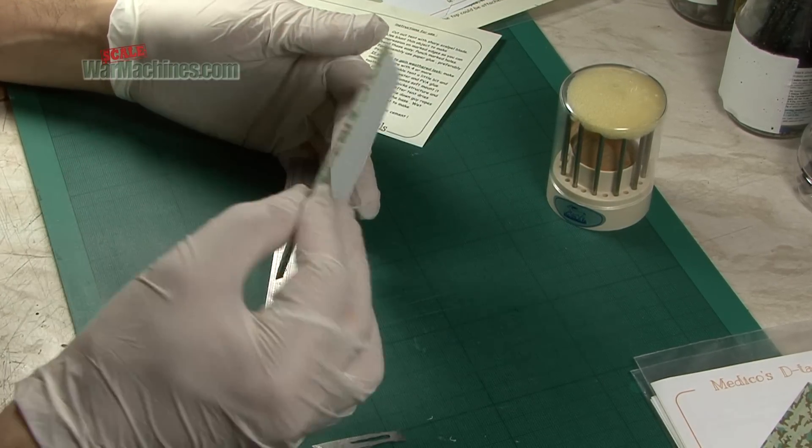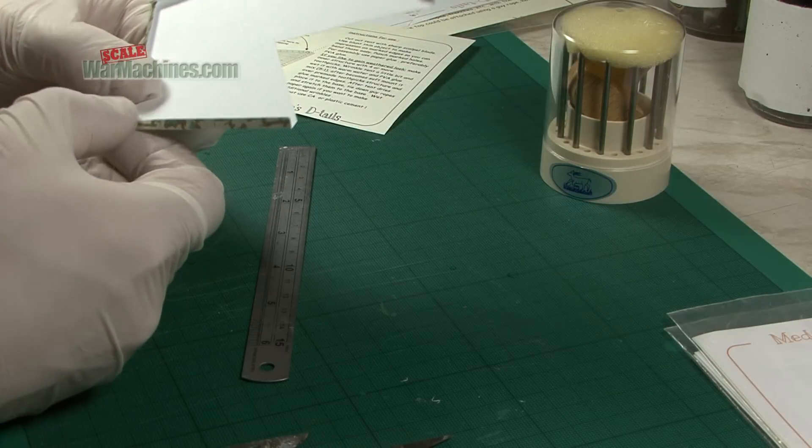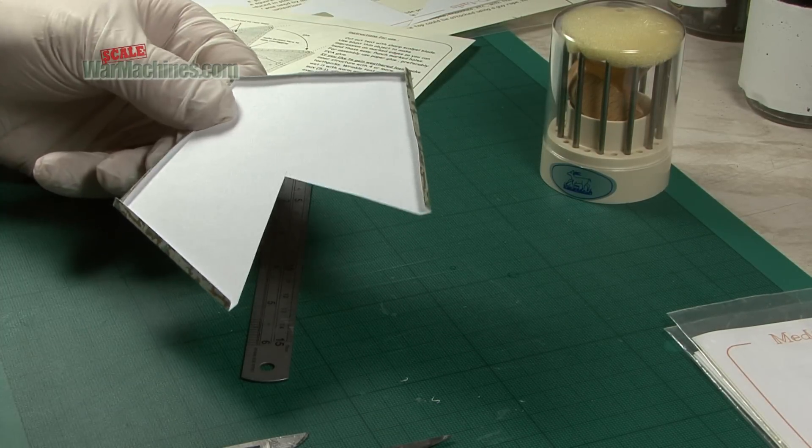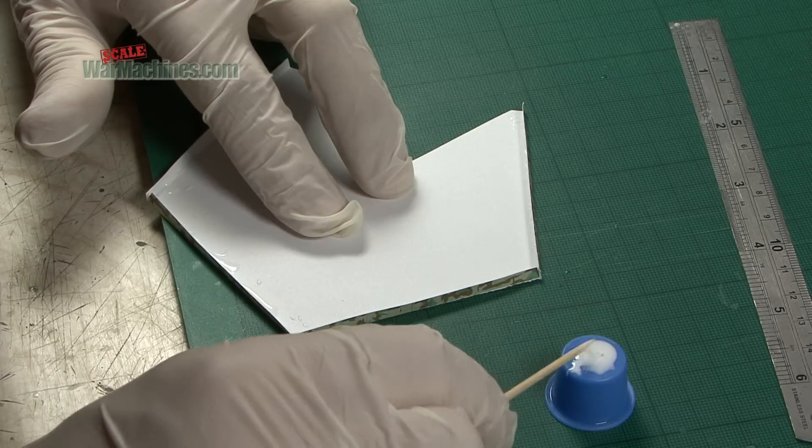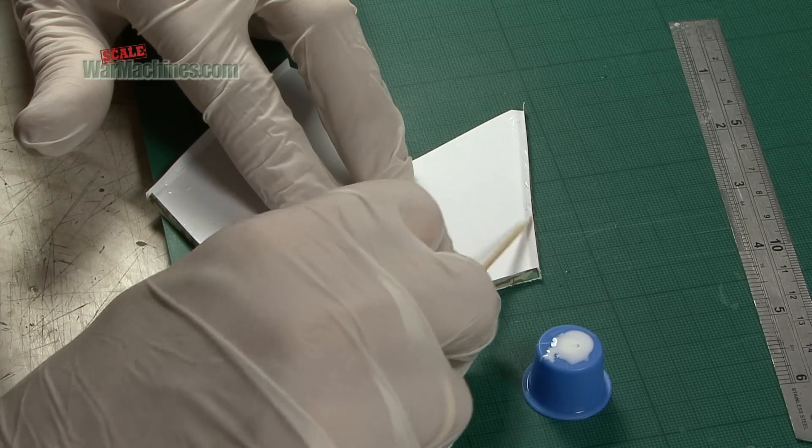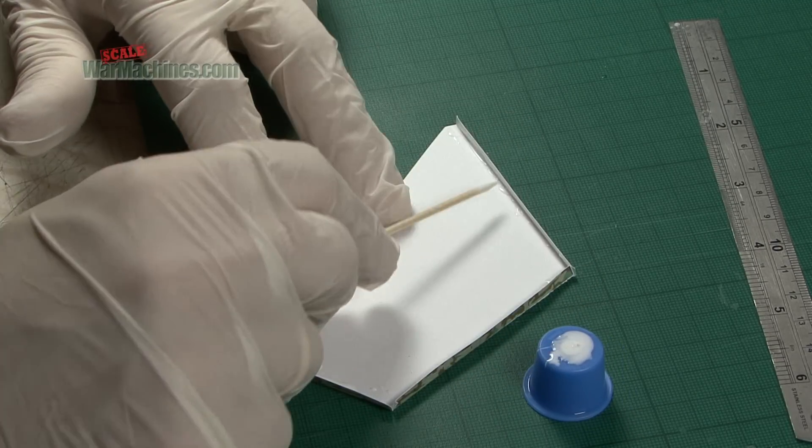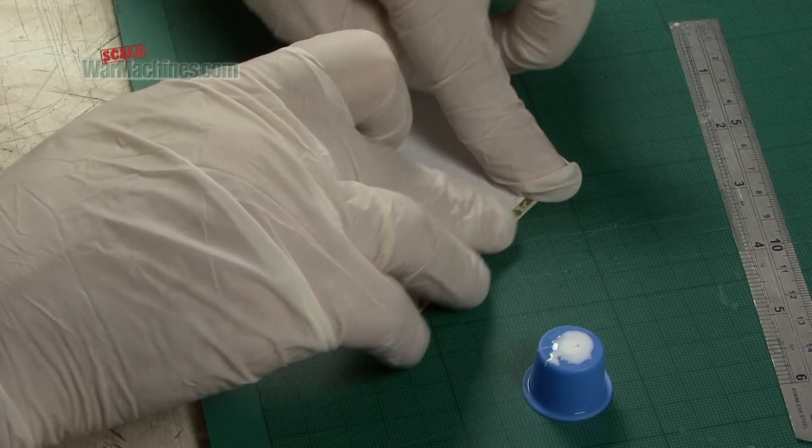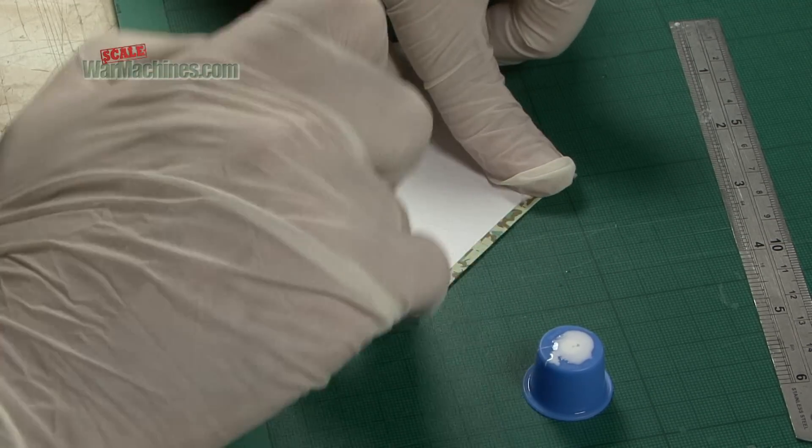That's going to be attached on the inside. It'll just be a case now of gluing. This is just a standard white glue. Any sort of PVA will do the trick. Once you've glued it you fold over and hold in place.